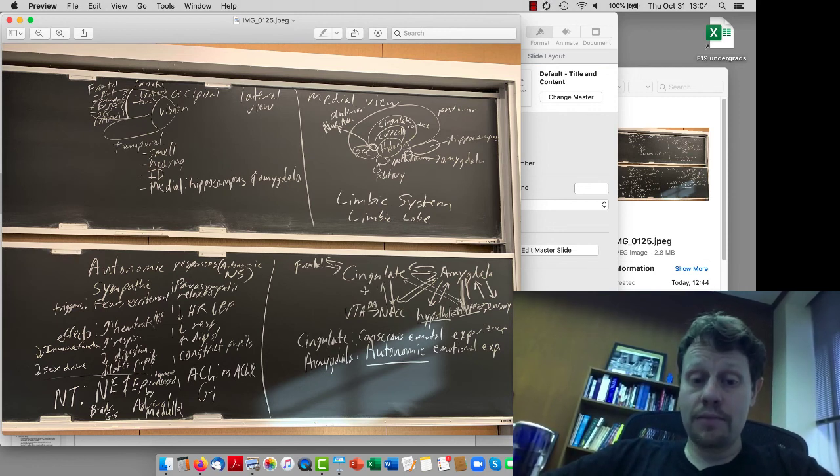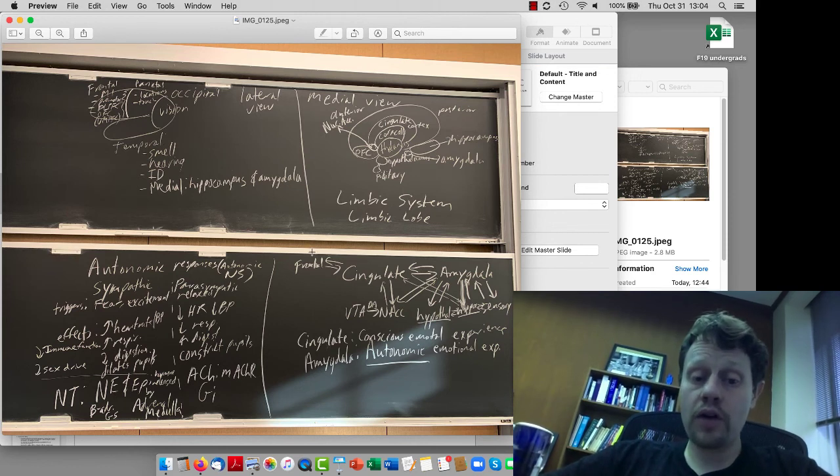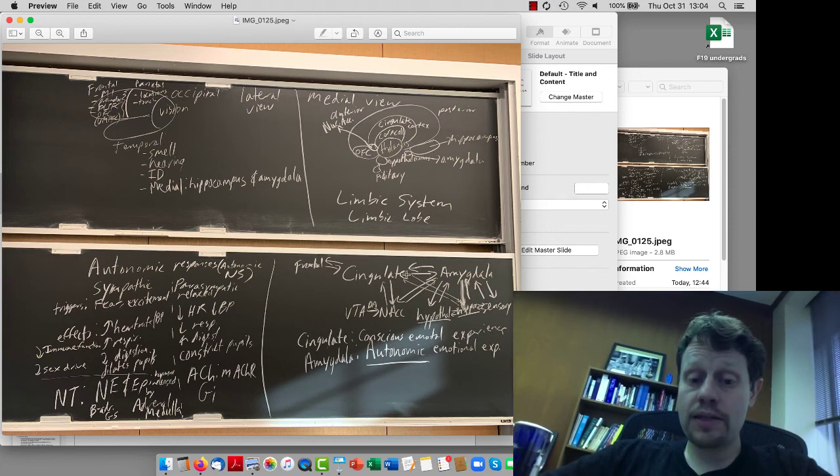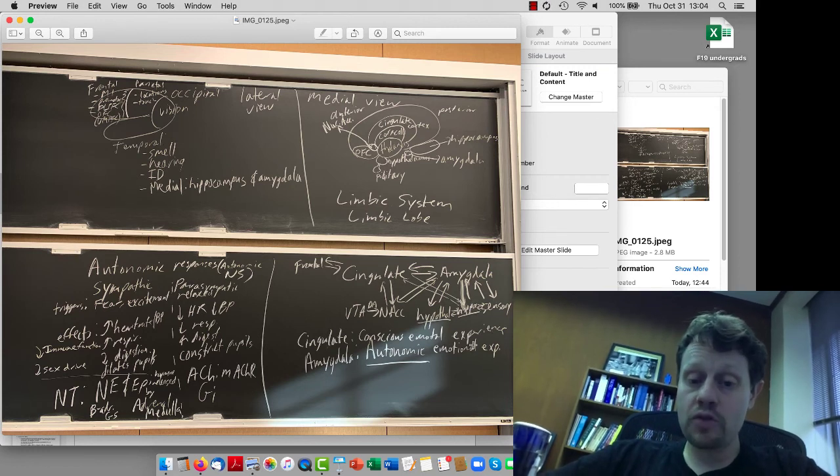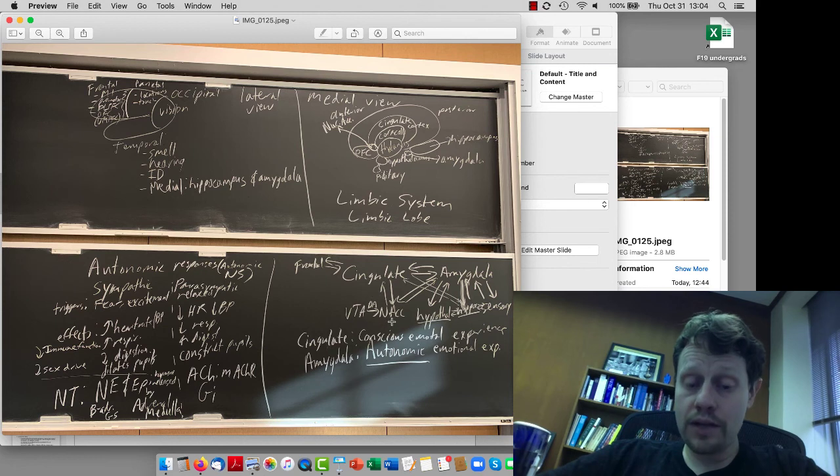In the limbic system, there's quite a lot of interconnection with other areas of the brain, like the frontal lobes and also sensory areas into the cingulate, as well as back and forth connections between the cingulate and the amygdala, the cingulate and the hippocampus, hippocampus and the amygdala. The amygdala gets some direct sensory information, as does the hippocampus. The nucleus accumbens and ventral tegmental area are also interacting with these areas.